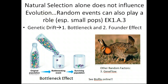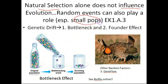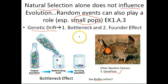Beyond natural selection — which is the logical portion of evolution driven by random mutation — there are other random events that influence evolution and can change a population's gene pool and allele frequency, especially in small populations. These include cases of genetic drift and gene flow. Specifically, the bottleneck effect and the founder effect are key instances of genetic drift you need to know.